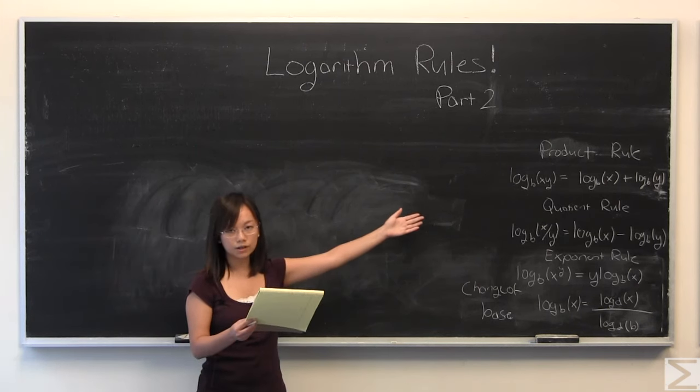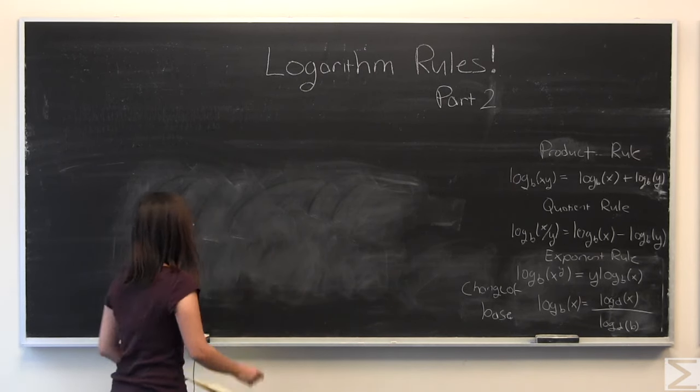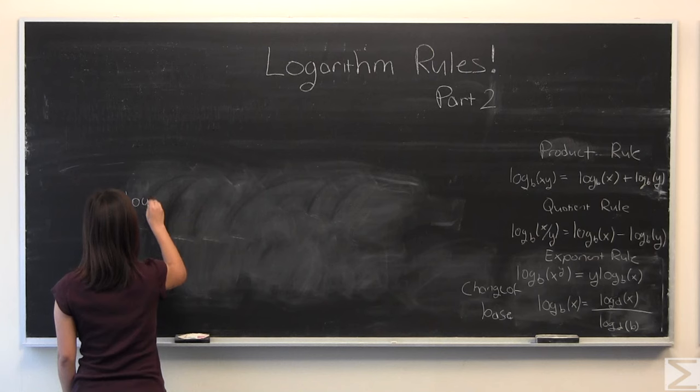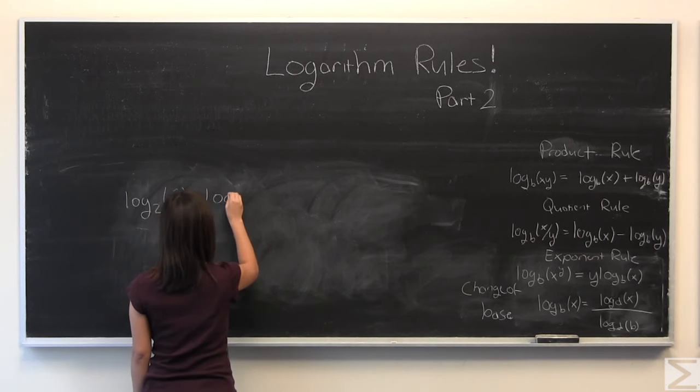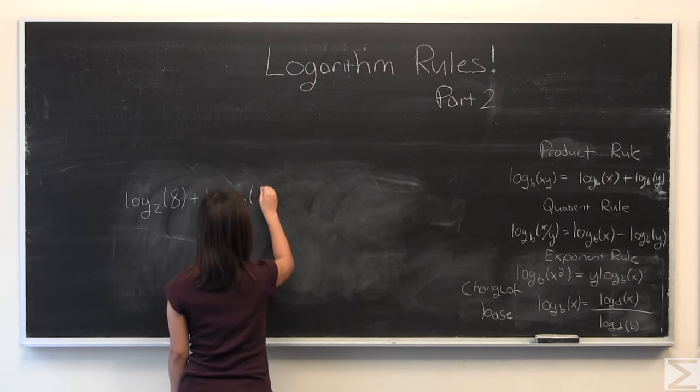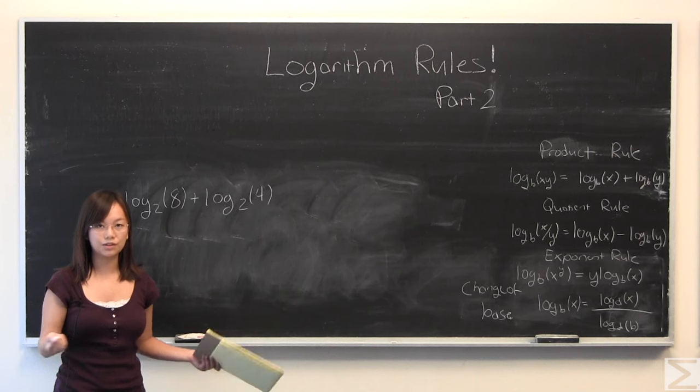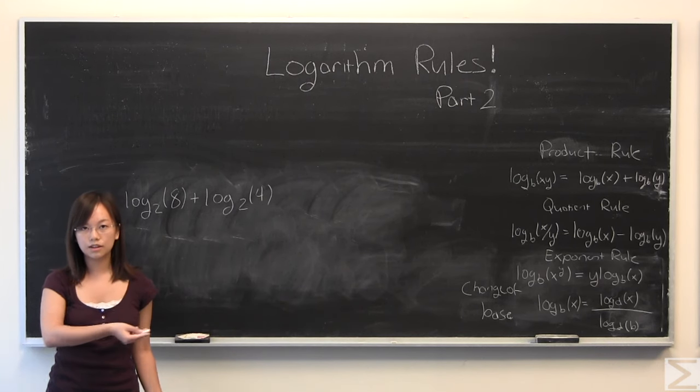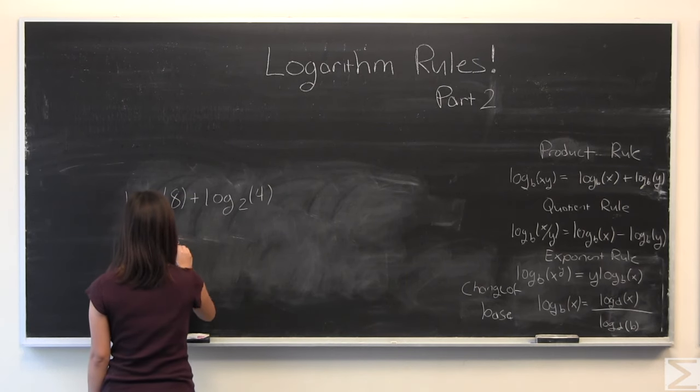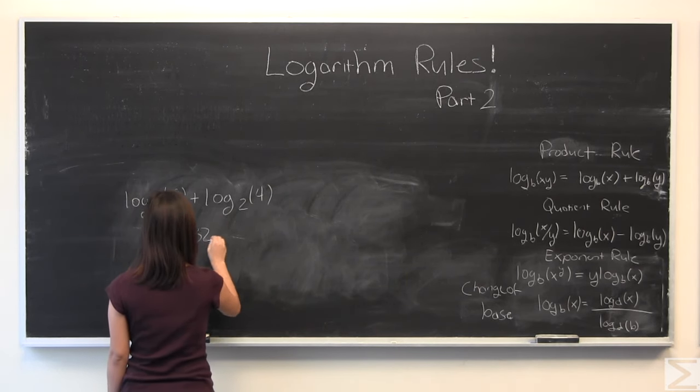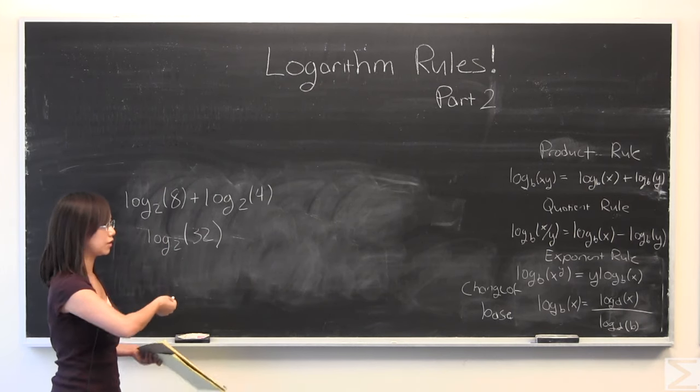OK, so I wrote the product rule over there. And we're going to use it to solve an example. So say we have something like this. And yes, it is solvable by itself. But you can also use a product rule. And I'll show that they're both equivalent. So the product rule states that we can turn this into log base 2 of 32, because 8 times 4 is 32.